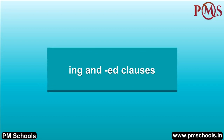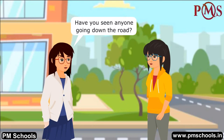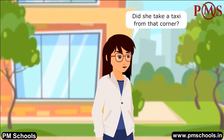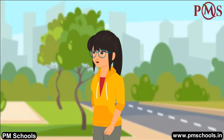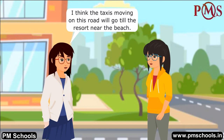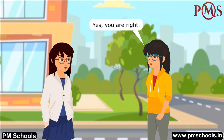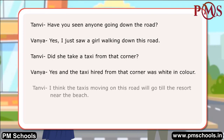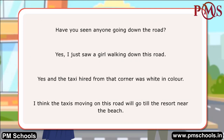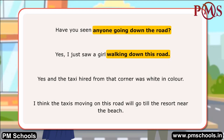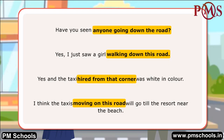ING and ED clauses. Have you seen anyone going down the road? I just saw a girl walking down this road. The taxi hired from that corner was white in colour. I think the taxis moving on this road will go till the resort near the beach. Tanvi and Vanya have used ING and ED clauses to express themselves. Examples: 'Have you seen anyone going down the road?' 'I just saw a girl walking down this road.' 'The taxi hired from that corner was white.' 'The taxis moving on this road will go till the resort near the beach.'